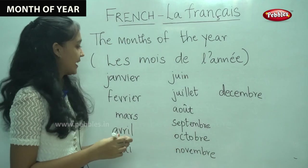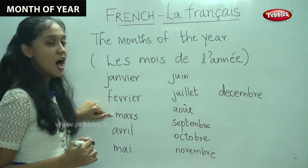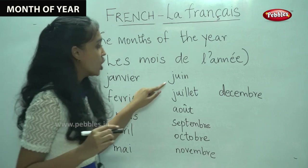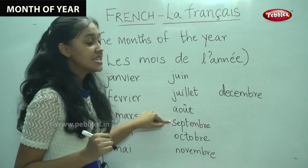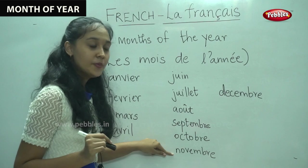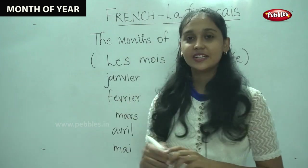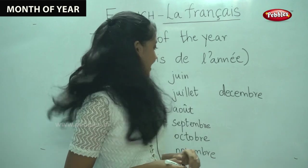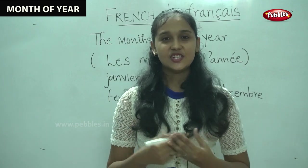So let us say it once again: Janvier, Février, Mars, Avril, Mai, Juin, Juillet, Août, Septembre, Octobre, Novembre, and Décembre. I hope you now know the months of the year. So, what month is this? Can anyone say? Yes, it is Septembre. When you keep saying it again and again, it will get etched in your memory.